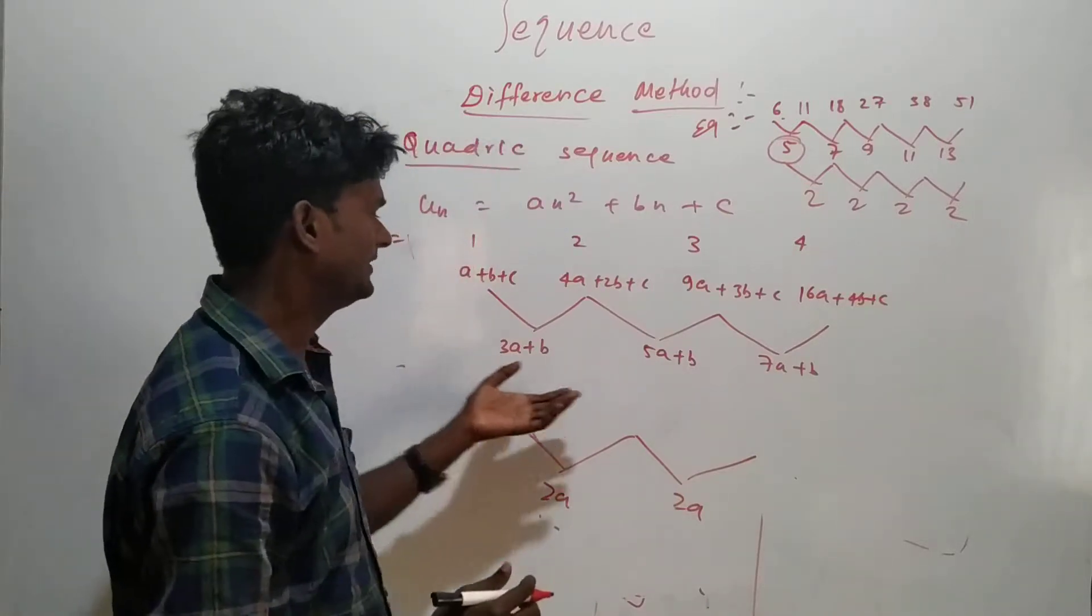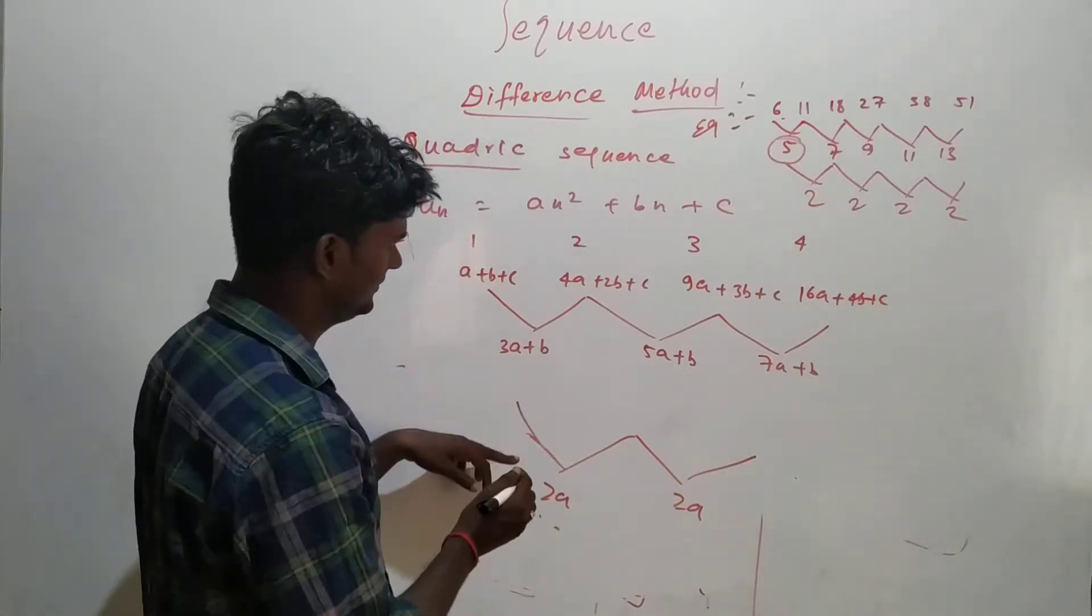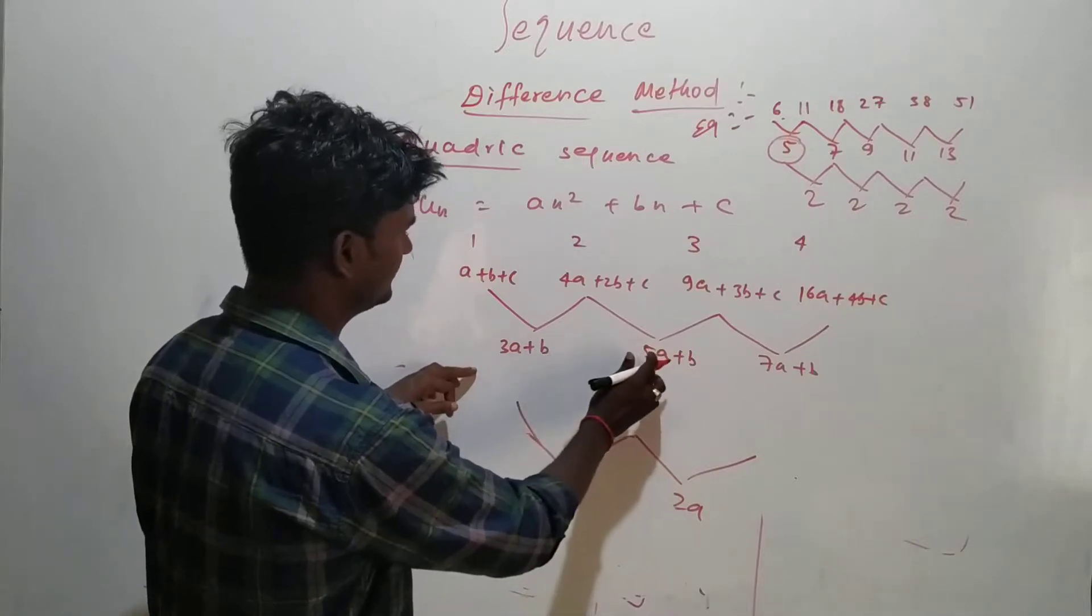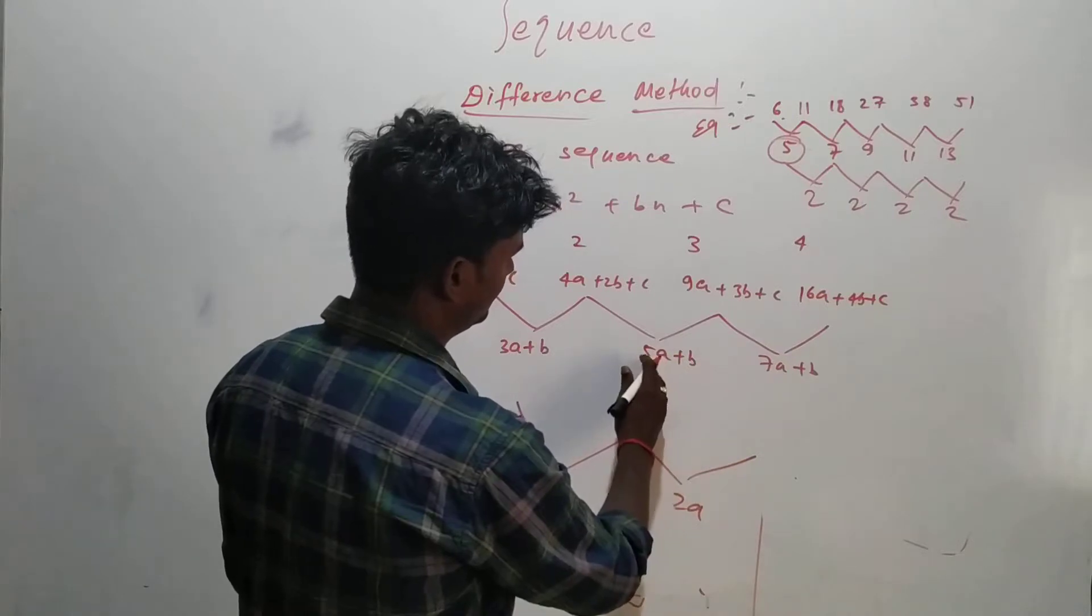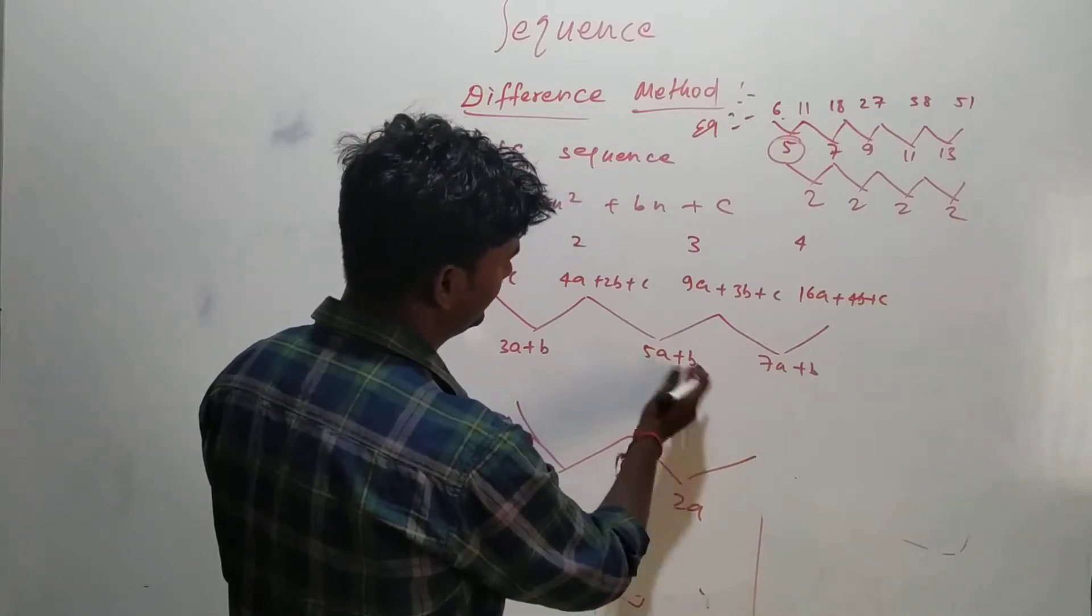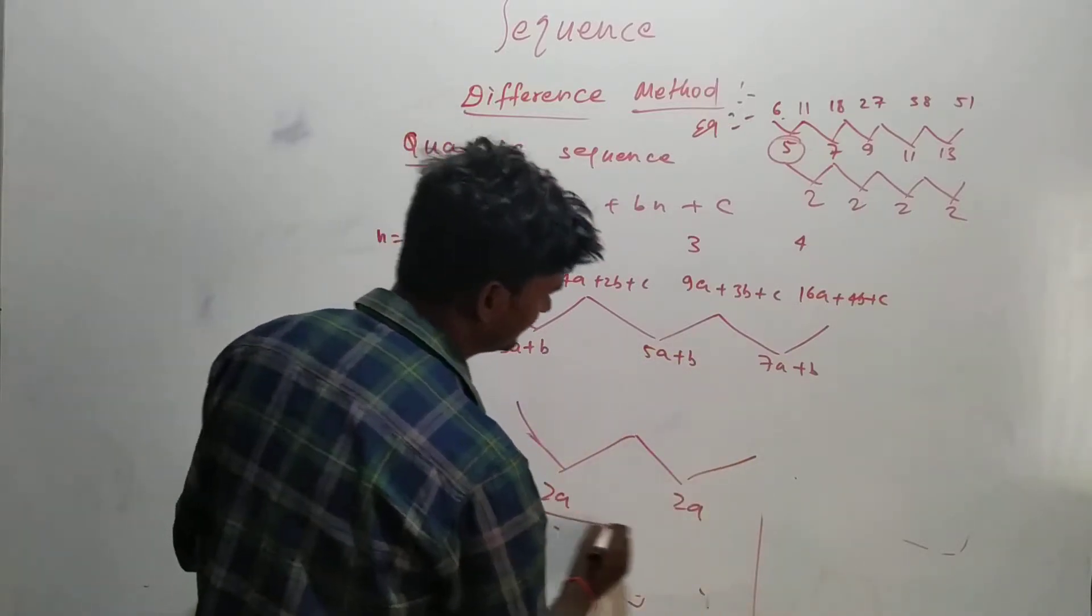Again we have to take the difference, so b gets cancelled. 5a minus 3a will be 2a, and if you substitute 7a plus b and 5a plus b you will be getting 2a. So here we are getting the constant.